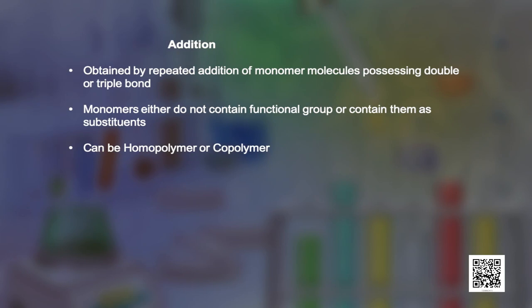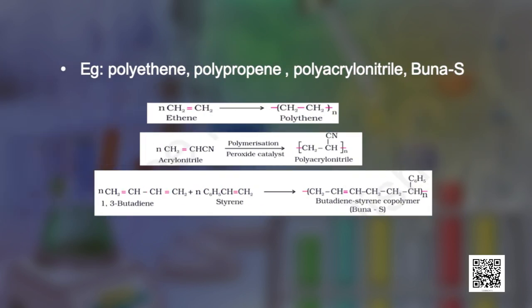Polymers can be classified into two subgroups: addition polymers and condensation polymers. Addition polymers are obtained by repeated addition of monomer molecules possessing double or triple bonds. These monomers either do not contain functional groups or contain them as substituents only. The formation of polythene from ethene is an example of a homopolymer addition polymer, while the formation of polyacrylonitrile from acrylonitrile shows that the functional group is acting as a substituent only.